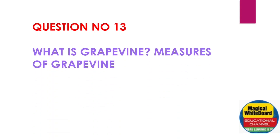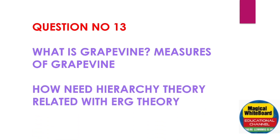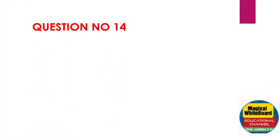Question Number 13: What is the grapevine and what measures relate to it? These questions are theoretical five-mark questions. Also: How is Hierarchy Theory related with ERG Theory? Discuss the relationship between hierarchy theory and ERG theory. This is an important question — Question Number 14.